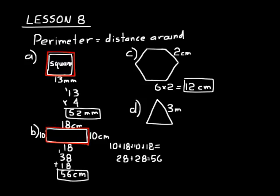Look at problem D. That's an equilateral triangle, meaning all three sides are the same length — each side is three meters long. These aren't to scale; if I really wanted to draw a triangle with three-meter sides it would be bigger than our board. Each side is the same length and there are three of them, so we do three times three, which is nine meters — that's the perimeter of that equilateral triangle.